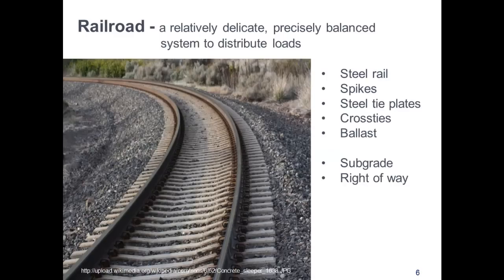The railroad is a relatively delicate, precisely balanced system to distribute loads. First, you've got the steel rails, spikes, steel tie plates, cross ties, ballast, subgrade, and of course this all sits on the railroad right-of-way. Ballast seems underappreciated. People may not understand all the functions it performs. It supports the tracks and distributes the load of the track and train to the subgrade, it restrains the track, and provides drainage for the track.